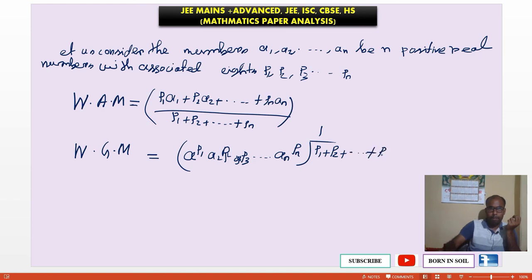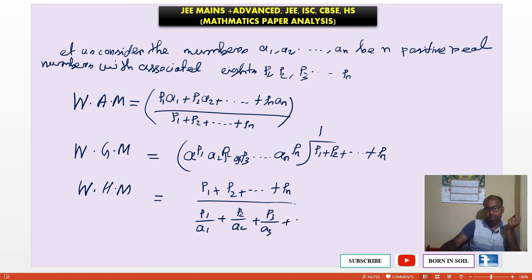And weighted HM: p1 plus p2 plus pn divided by p1 by a1 plus p2 by a2 plus p3 by a3 up to pn by an, which is called weighted harmonic mean.